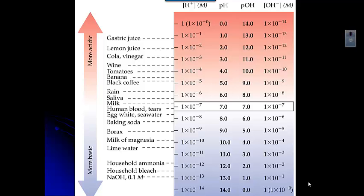When you look at body fluids like blood and tears, those are fairly close to 7, which is neutral. Things we use for cleaning, like baking soda, borax, ammonia, and bleach, tend to have very high pHs. Things with low pHs tend to be things we eat or drink — they taste acidic, vinegary or sour. Things that are basic tend to taste bitter; if you've ever taken milk of magnesia or brushed your teeth with baking soda, those things do not taste very good.